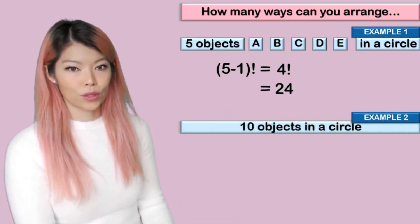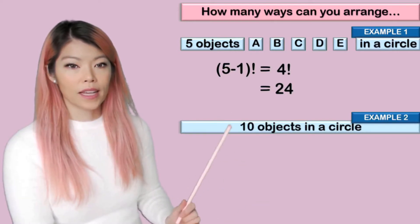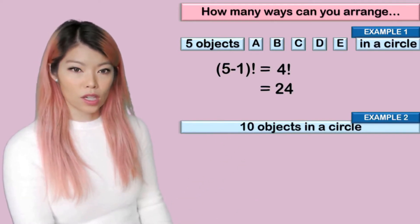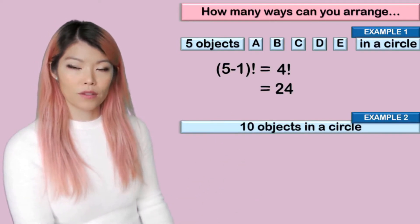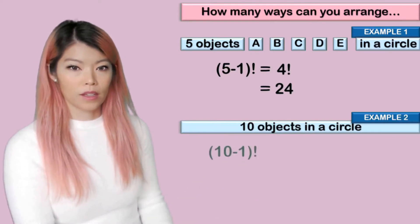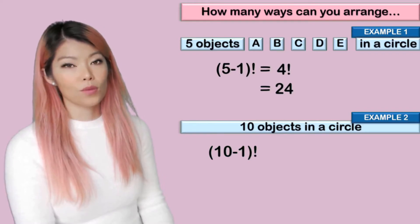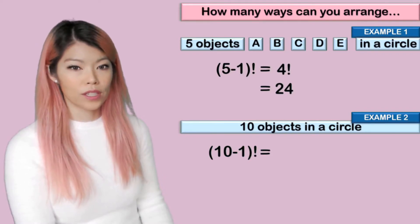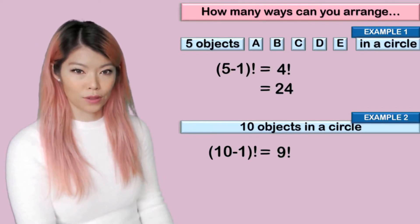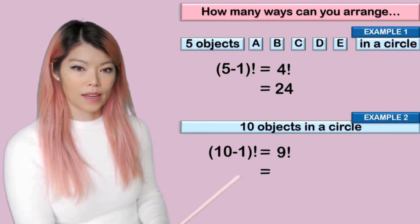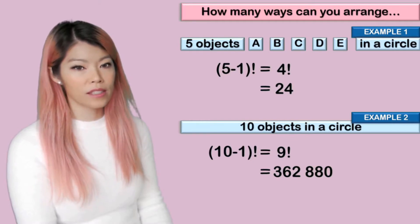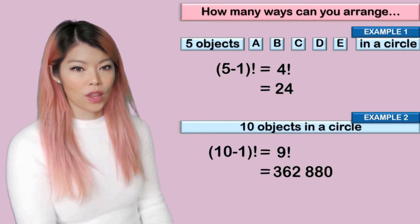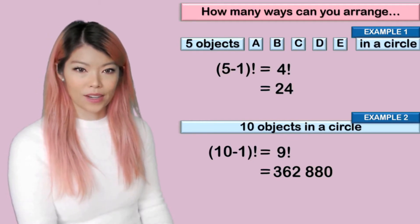Example two: if you have ten objects in a circle, how many ways can you arrange them? So again, (10 − 1) factorial, which is nine factorial. And that is, on the CAS calculator, 362,880.